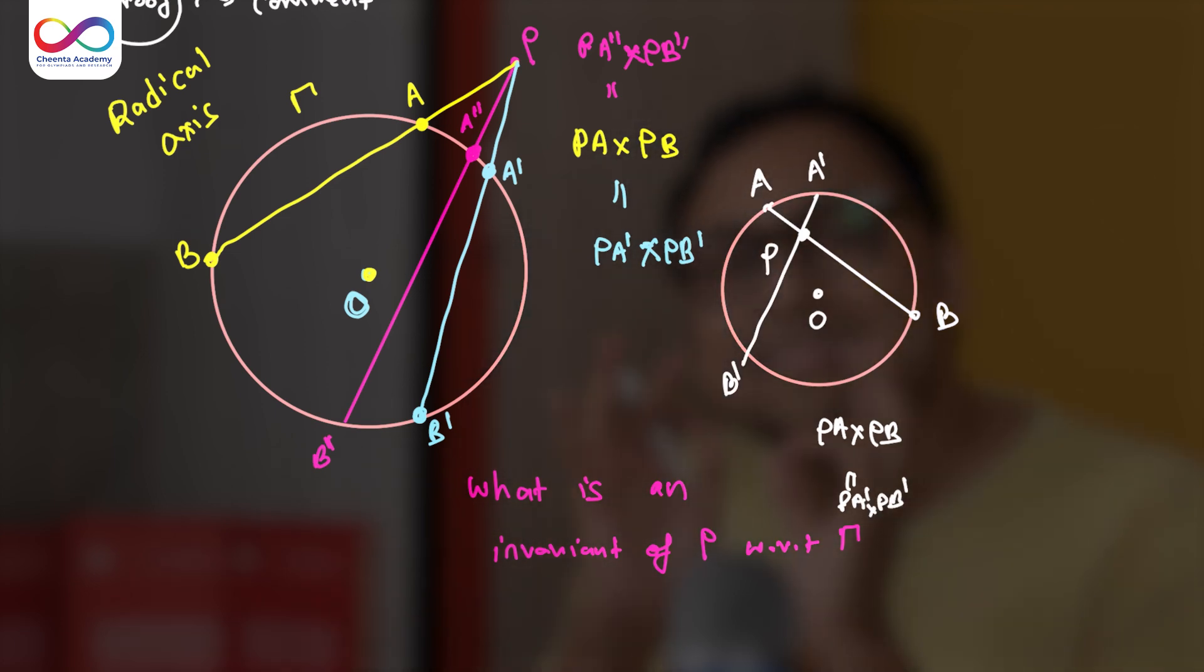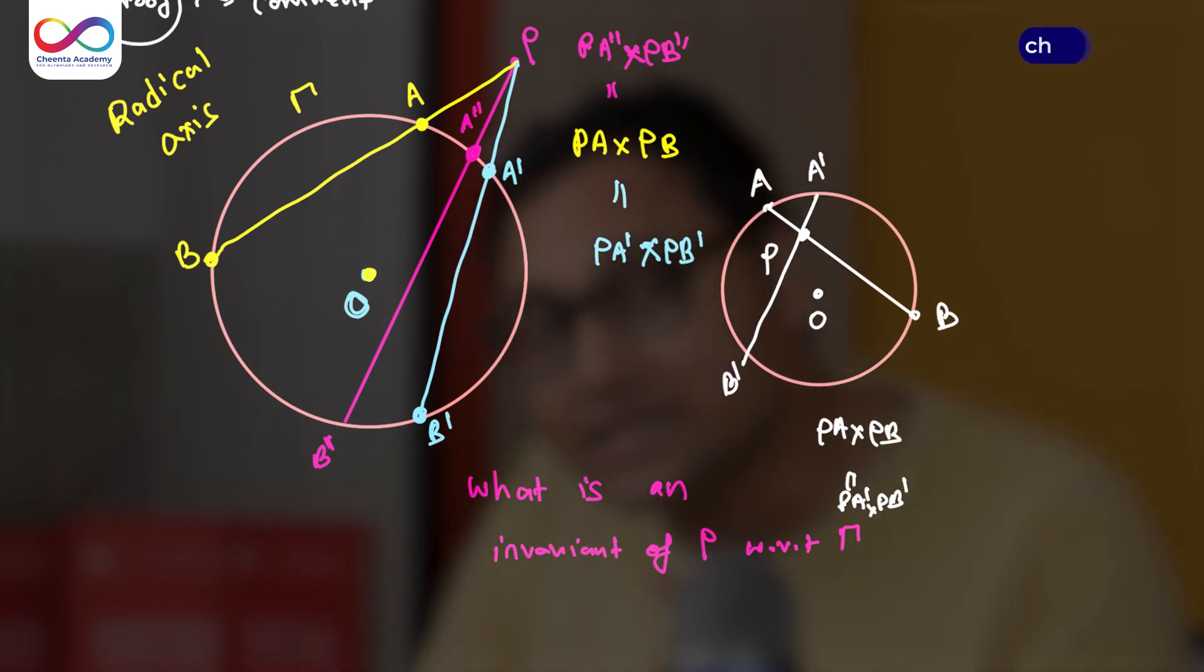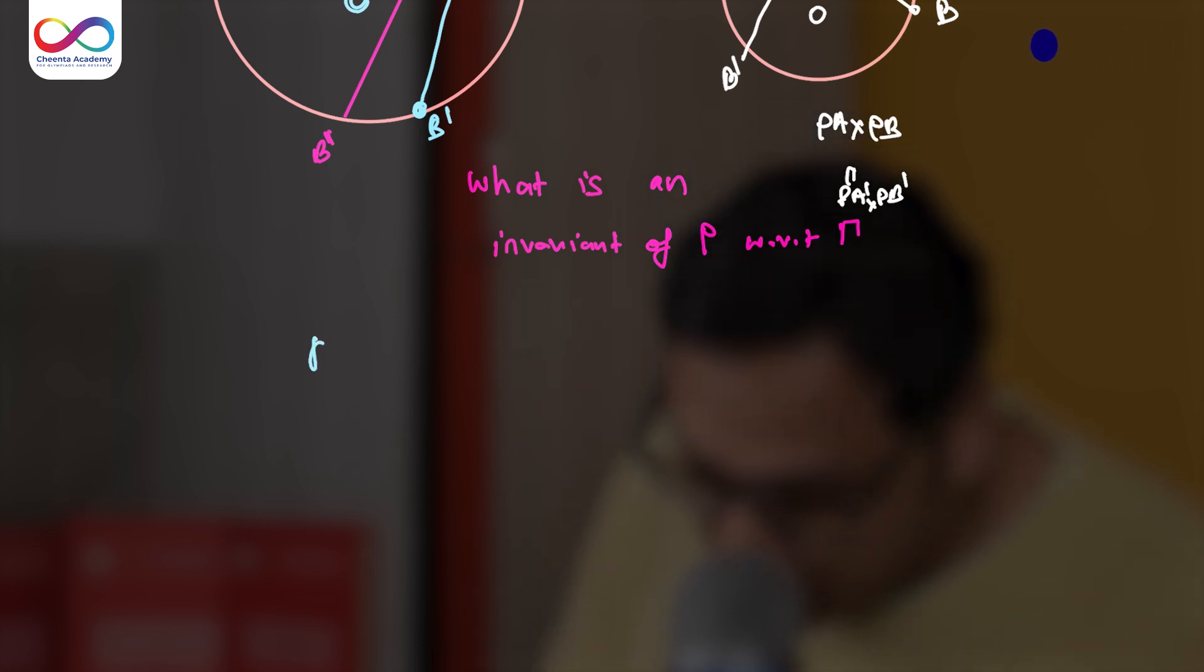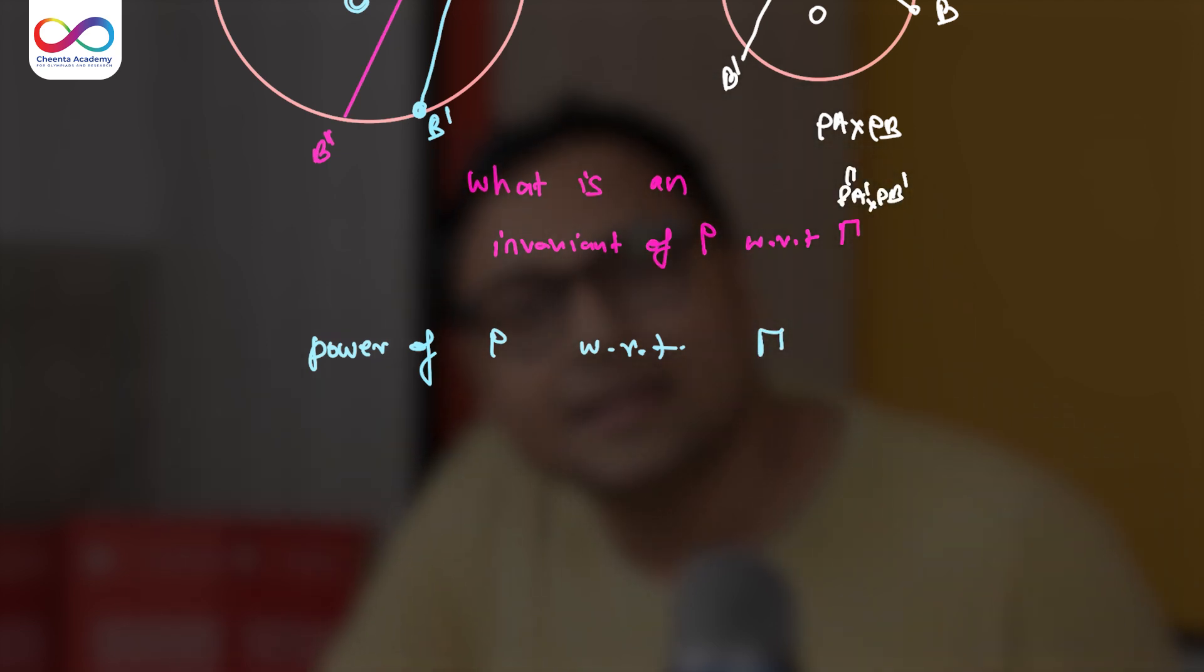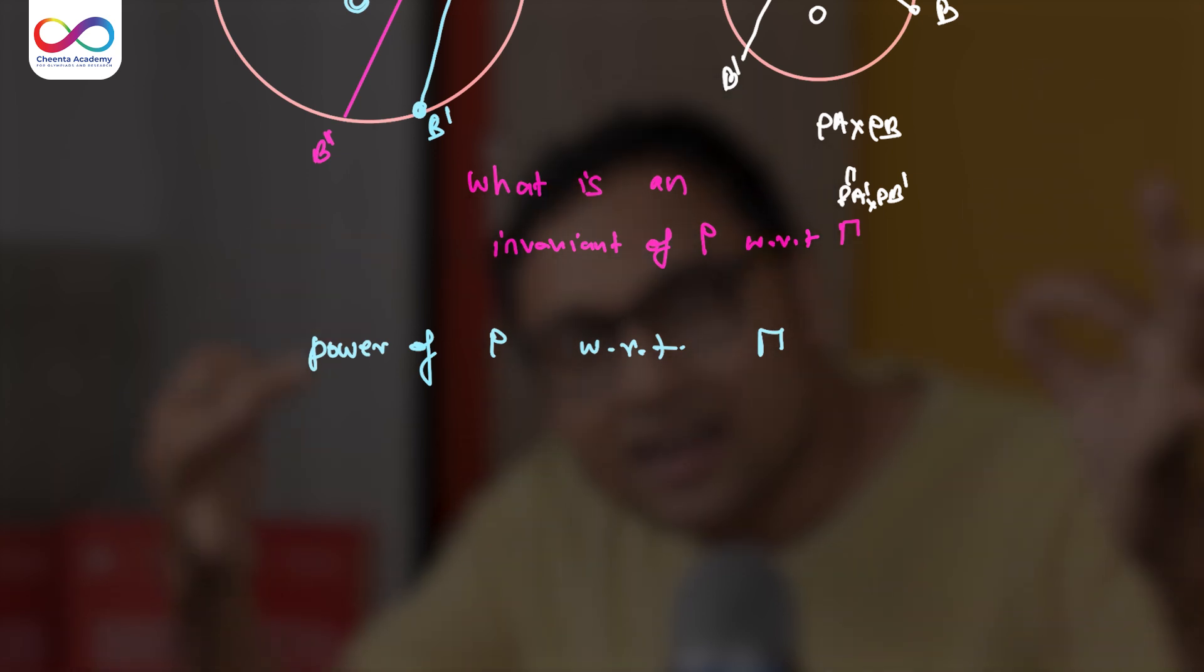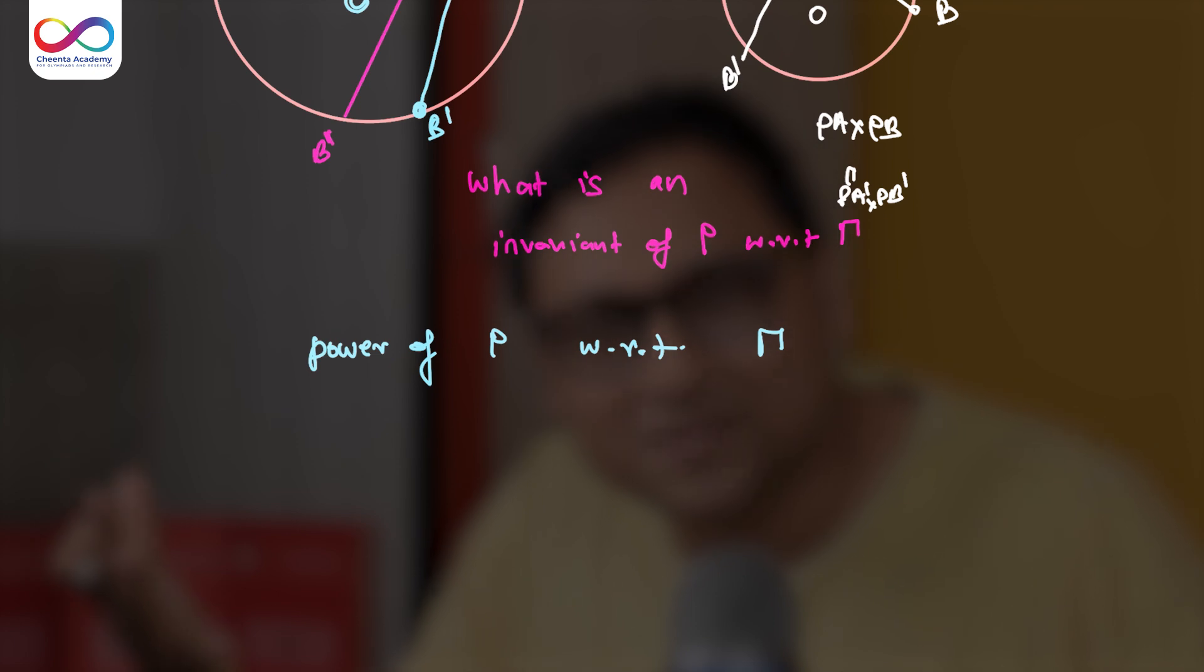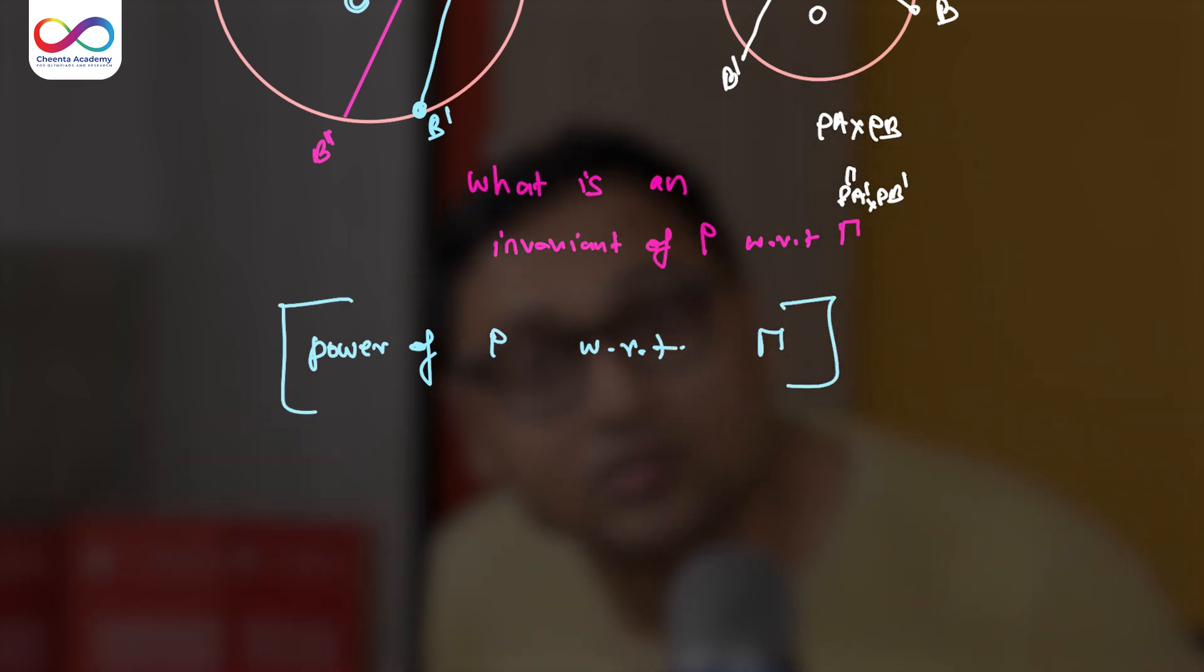So this value is called the power of the point P with respect to the circle. This is called power of P with respect to the circle gamma. And why do we give this a special name? Well, because it's an invariant of the circle and the point. So we pay some respect to that fact and we give it a special name. It's the power of the point P with respect to gamma.